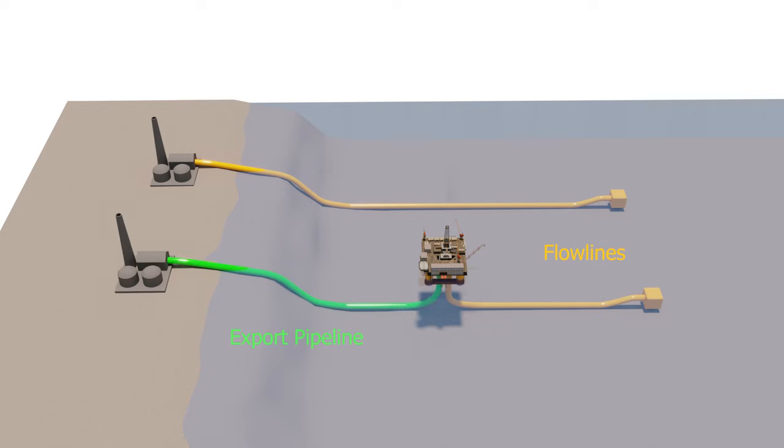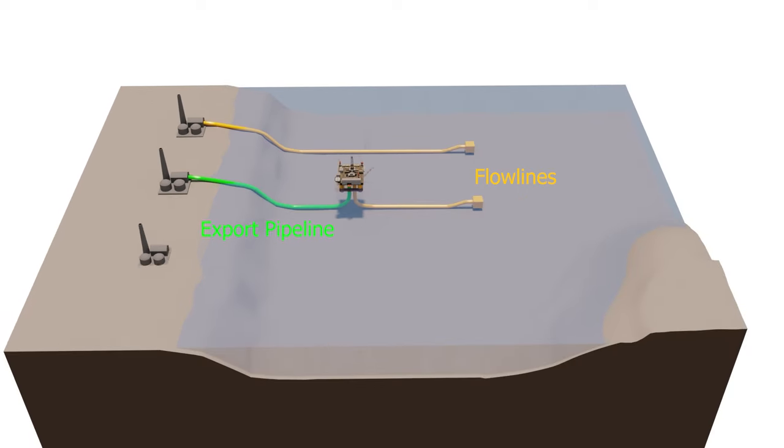Export pipelines are responsible for transporting processed oil or gas from the production platform to onshore and offshore facilities. Transmission pipelines carry oil or gas from one coast to another, primarily for trading purposes.